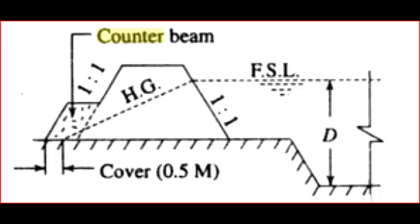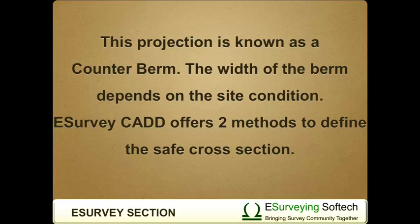Sometimes it may occur that hydraulic gradient line intersects the outer side of the bank. In that case, a projection is provided on the bank to obtain minimum cover. This projection is known as a counter berm. The width of the berm depends on the site condition.